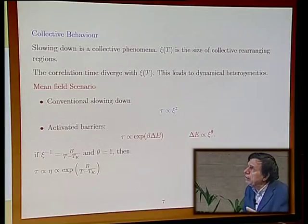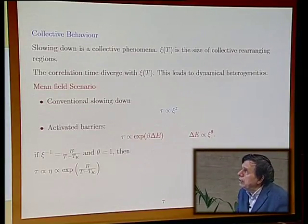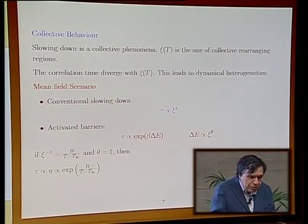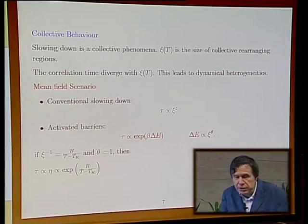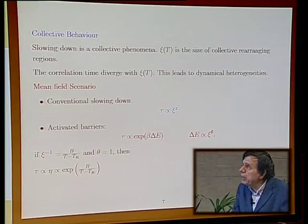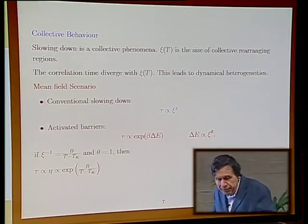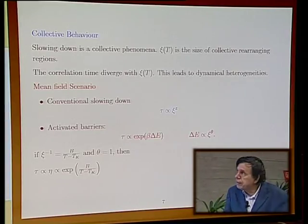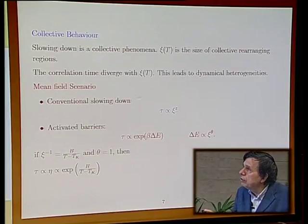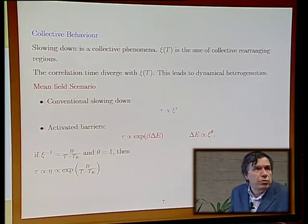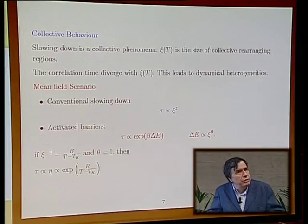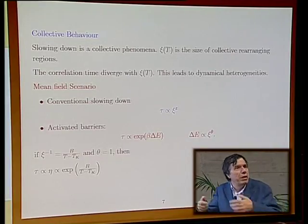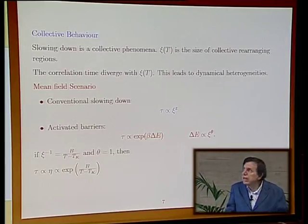Therefore, one of the things that we would like to understand is how to measure and look at these correlation lengths. We have all the typical problems that come out in a second-order transition. We have a certain region of conventional slowing down in which the correlation time behaves like the correlation length to some power z, like conventional slowing down.